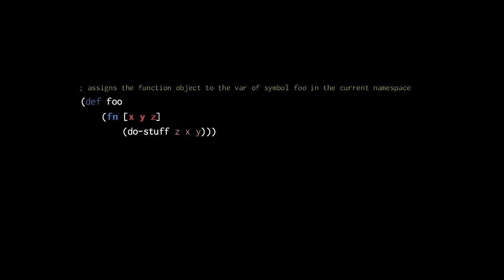Because enclosing fn forms in a def form is such a common thing to do, Clojure provides a macro defn that does the same thing in a more compact form. So these two expressions are equivalent.